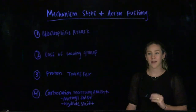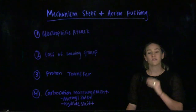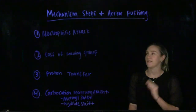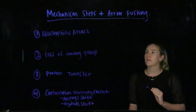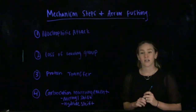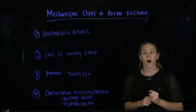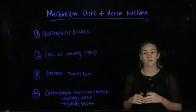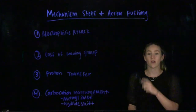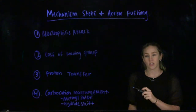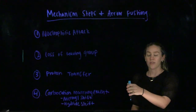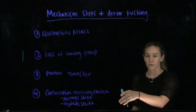Now we're going to be talking about mechanism steps. There are four main types that we'll do a quick overview of, then I'll go into detail and give you an example of each one. Our first mechanism step is called a nucleophilic attack. Next, we have the loss of a leaving group, then a proton transfer, and finally a carbocation rearrangement — which has two different types within it.